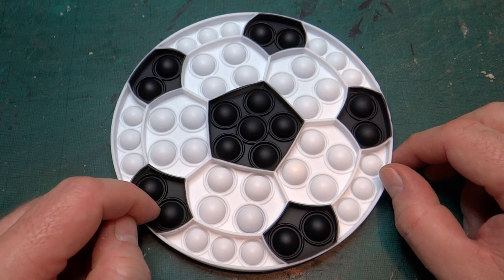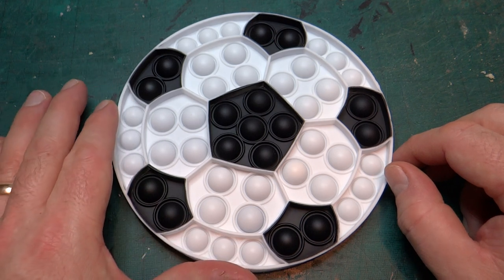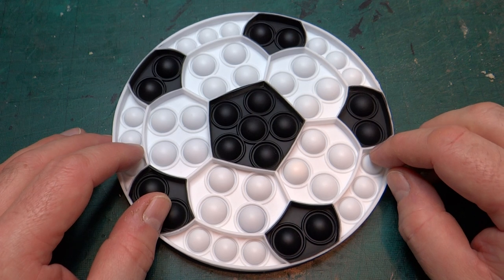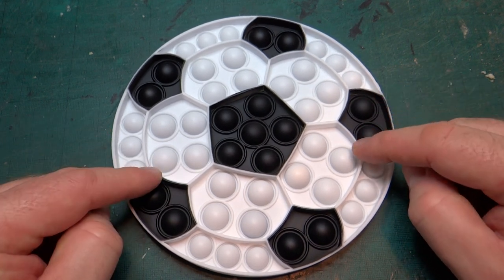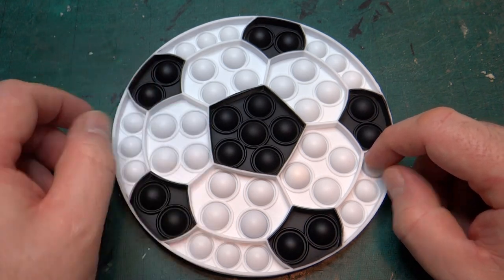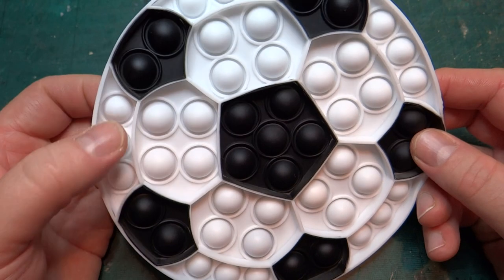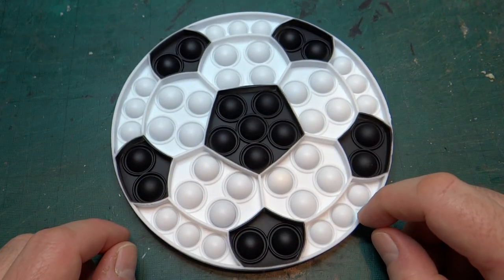I picked this up from a couple of different YouTube videos over Christmas. If I can find them again I'll put a link in the description. What you can see before you is one of these pop-it fidget toys where there's these semi-circles that you can push out and pop. This one is meant to look like a football.